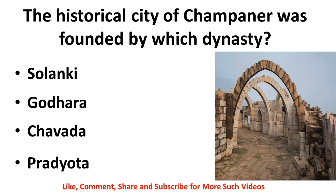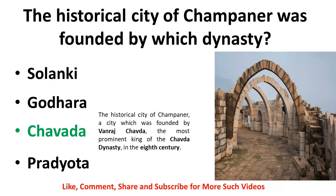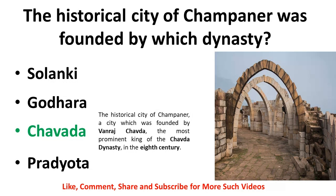The historical city of Champaner was founded by which dynasty — Solanki, Godhara, Chavala, or Pradyota? The correct answer is Chavala. King Vanraj Chavala, the prominent king of the Chavala dynasty, established the historical city of Champaner in the 8th century. Please note the keywords: Vanraj Chavala, prominent king of Chavala dynasty, established Champaner in the 8th century.